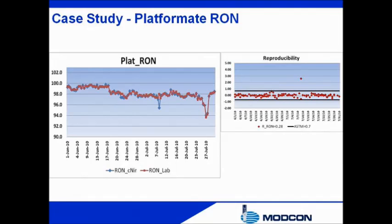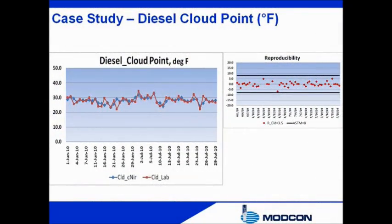RON and MON analysis are major applications of the Beacon NIR process analyzer in measuring platformate and in the production of gasoline. The high correlation between laboratory and NIR process analyzer measurements is the keystone in accepting replacement of expensive NOC engines by NIR process analyzers. Also, in the measurement of cloud point of diesel oil, the deviation between laboratory measurements and NIR measurements is very close and within the score of allowed reproducibility. It is demonstrated how closely the NIR analyzer responds to variations of the cloud point in the process stream as observed by laboratory analysis.